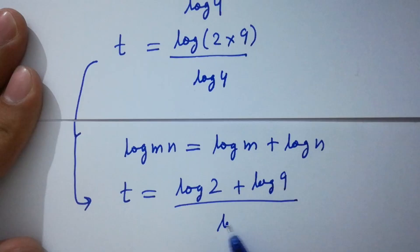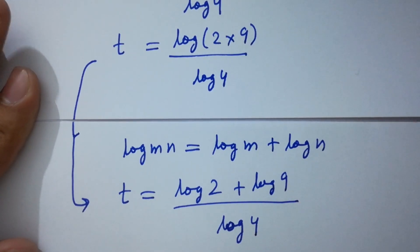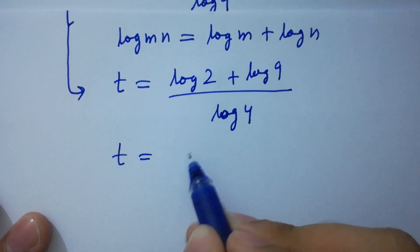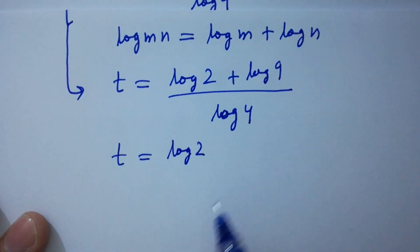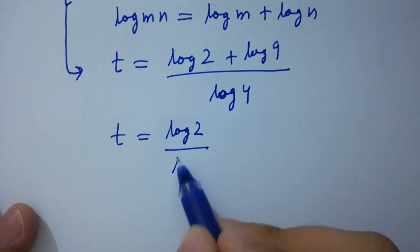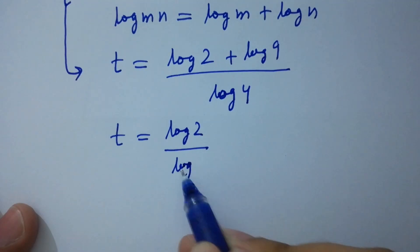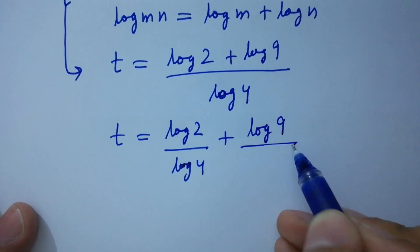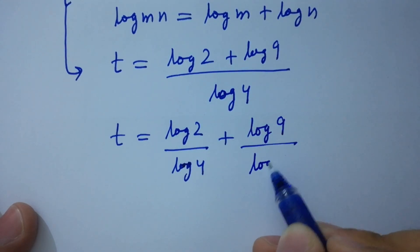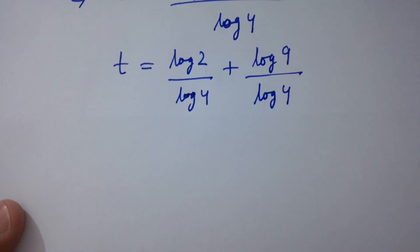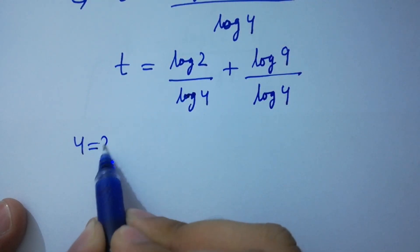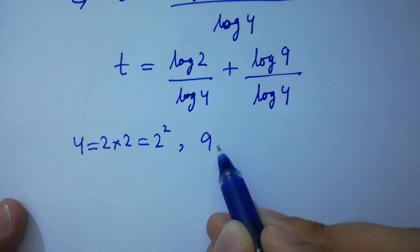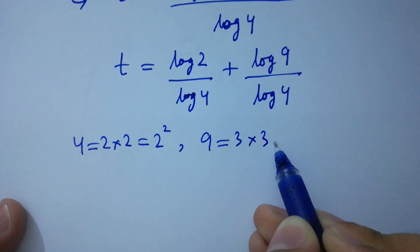Simplify this by separating the fractions over log 4: t equals log 2 over log 4 plus log 9 over log 4. Since 4 equals 2 squared and 9 equals 3 squared, it becomes log 2 over log 2 squared plus log 3 squared over log 2 squared.